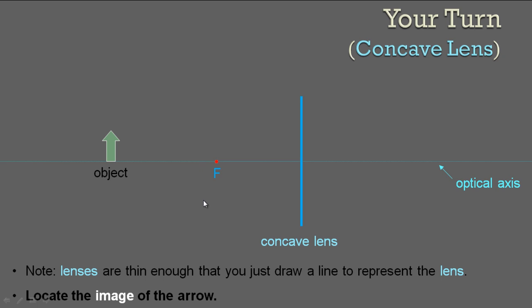Now it's your turn — pause and draw your own ray diagram. In the example I did, the object was between the focal point and the lens. This time the object is on the other side. Pause and draw, because what you get out is what you put into it.